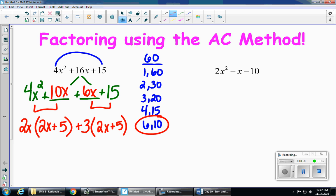Now my parentheses match, which should always happen if you did it correctly. So that gets written once, 2x plus 5. And then the other two pieces go in a second parentheses, 2x plus 3. And that's how you factor a trinomial with a leading coefficient using the AC method.